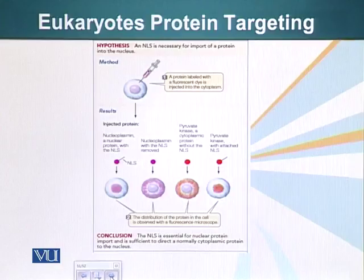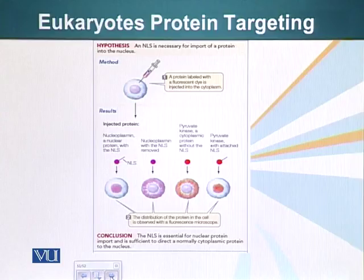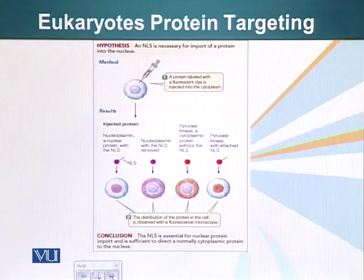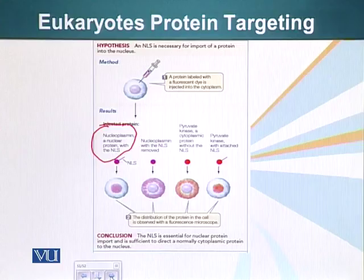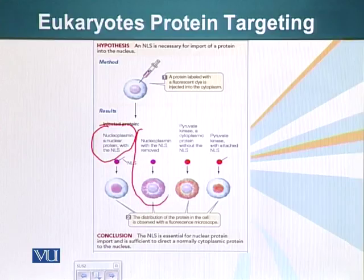Here I would like to point out a very interesting experiment, done to show the significance of signal sequence. In this case, the signal sequence is NLS — nucleus localization sequence. These researchers took a protein called nucleoplasmin, which has NLS and is therefore sent to the nucleus. They removed the NLS from this protein and injected it into the cell to see whether it would still go to the nucleus. Without NLS, the protein did not go into the nucleus — it basically stained the cytoplasm of the cell.